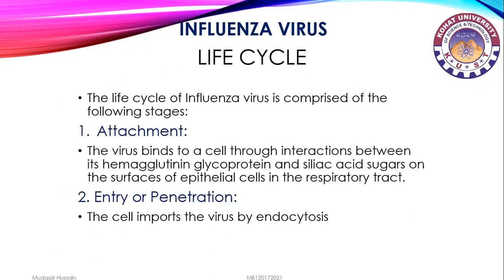Life cycle of influenza virus. The life cycle is comprised of the following stages. First is attachment: the virus binds to a cell through interactions between its hemagglutinin glycoprotein and sialic acid sugars on the surface of epithelial cells in the respiratory tract. After attachment, the second stage is entry or penetration: the cell imports the virus by endocytosis.